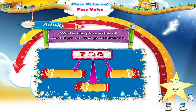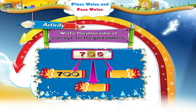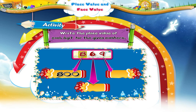Now write the place value of each digit for the given numbers. In seven hundred and five, the place value of seven is seven hundred, the place value of zero is zero, and the place value of five is five. In two hundred and fourteen, the place value of two is two hundred, the place value of one is ten, and the place value of four is four. In eight hundred and sixty-nine, the place value of eight is eight hundred, the place value of six is sixty, and the place value of nine is nine.